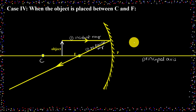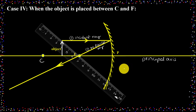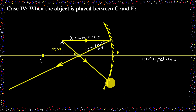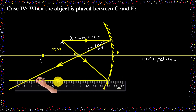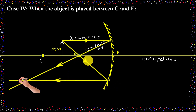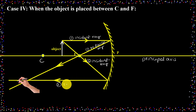To form the image, I need a minimum of two light rays. So I am taking one more light ray through the focus. If any light ray passes through the focus, the reflected ray will be parallel to the principal axis. I am keeping the scale parallel to the principal axis and drawing the second reflected ray.